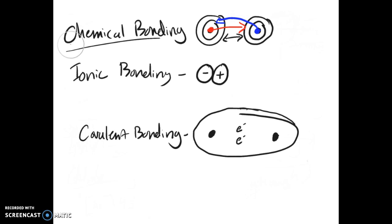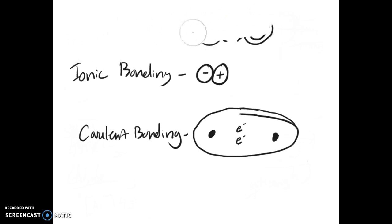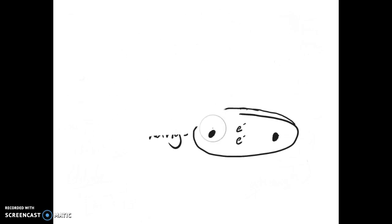Now, you can tell bond character from something called electronegativity difference, which is exactly what it sounds like. Basically, you can use this chart to tell what type of bond it is. If it's down here, it's nonpolar covalent. We'll put values in in a second.